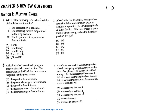For the second question: a block attached to an ideal spring undergoes simple harmonic motion. The acceleration of the block has its maximum magnitude at the point where... The answer is C — it is when the speed is minimum. This is because acceleration equals F over M, and for a mass-spring system, that is KX over M. So acceleration is maximum when displacement is maximum, equal to the amplitude. At that point, potential energy is maximum and kinetic energy — and therefore speed — is zero.